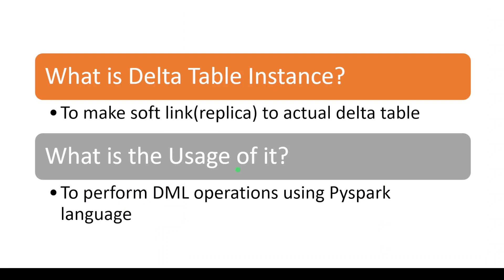What is a Delta table instance? A table instance is nothing but a replica of the actual Delta table. This table instance will just create a soft link to the actual table. So basically it will not create another copy of the actual Delta table; instead it will just create a soft link. This means even if you perform any DML operations on the table instance, it will be reflected in the actual table, and any modification in the actual table will be reflected in the table instance.